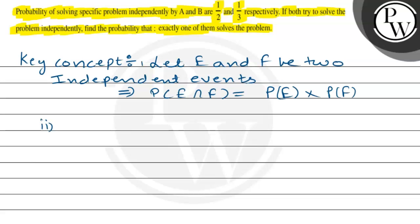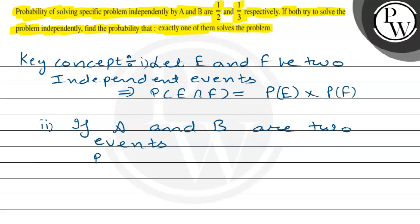The second key concept is: if A and B are two events, then the probability of A intersection B-complement equals probability of A minus probability of A intersection B. Using these two concepts we will solve our question.